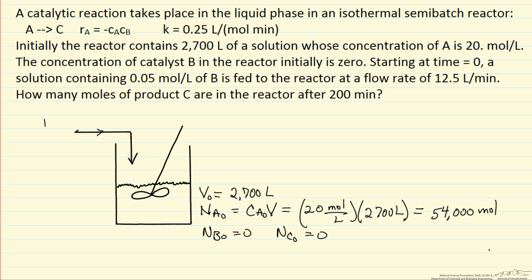Now our feed, the molar flow rate of B is the volumetric flow rate times the concentration of B coming into the reactor. The volumetric flow rate is 12.5 liters per minute, and the concentration is 0.05 moles per liter. So our molar flow rate of catalyst into the reactor is 0.625 moles per minute.